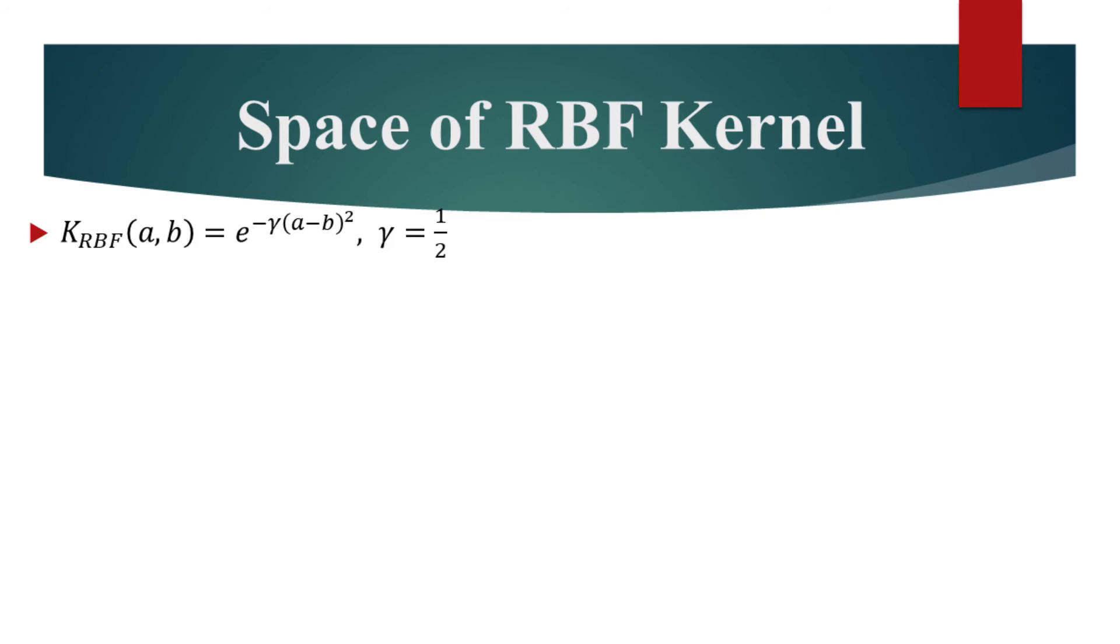Without loss of generality, we will use gamma equal to 0.5. Let's expand the square of this kernel. We can then use the power of product rule to rewrite it as follows.